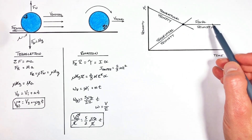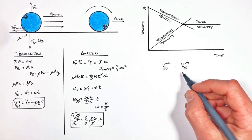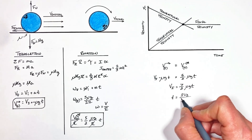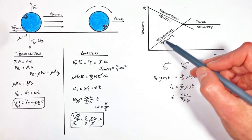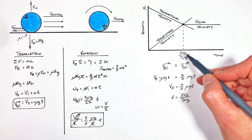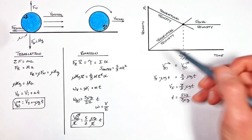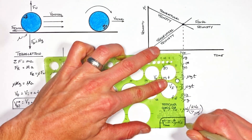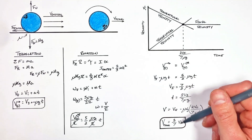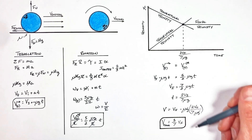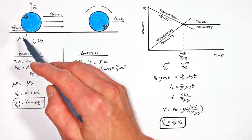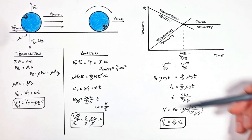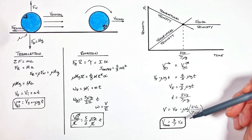To find that final velocity, we set the two velocity functions equal to one another. Solving for the time at which the translational and tangential velocities are equal, then substituting that time back into the equation for translational velocity, we find — rather amazingly — that the final velocity of the ball is five-sevenths of the initial velocity: Vf = (5/7)Vi. This result does not depend on the coefficient of friction, the mass, or the radius of the ball — all of those canceled out. It's only the shape of the ball (a solid sphere, giving I = 2/5 MR²) that influences the final velocity.